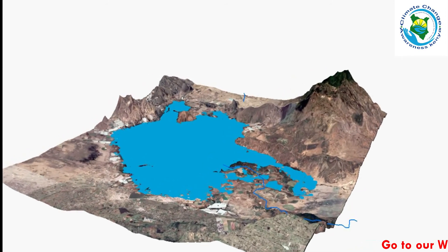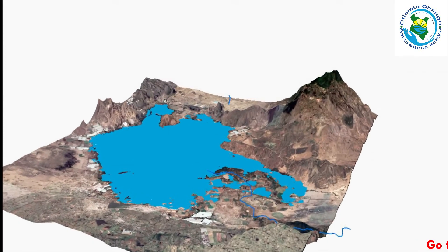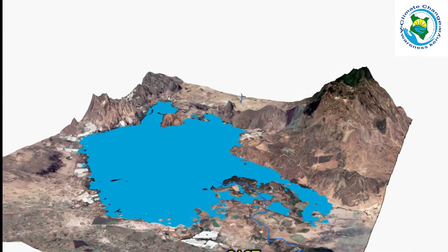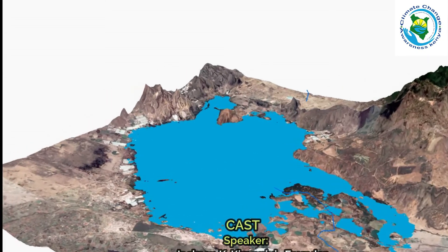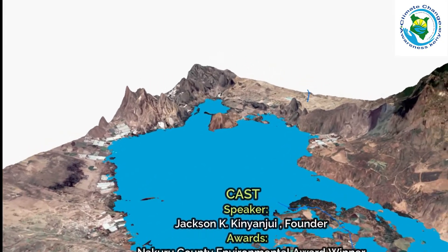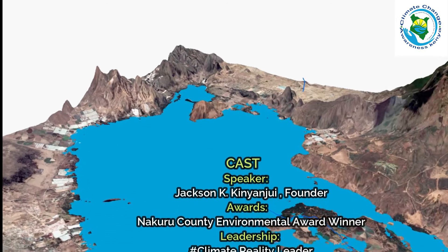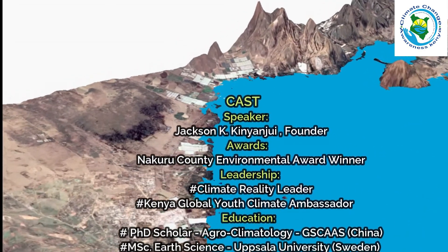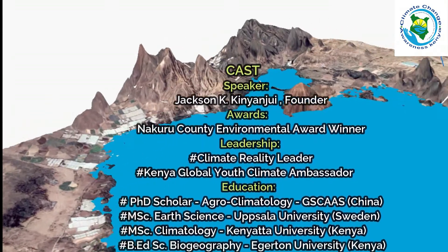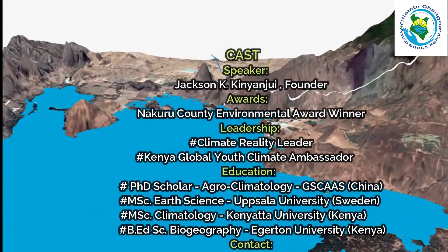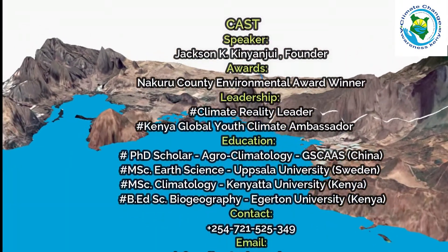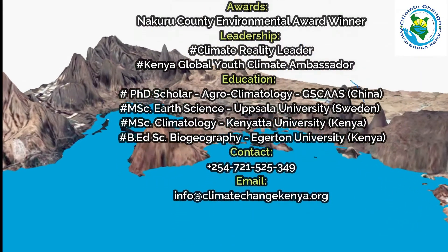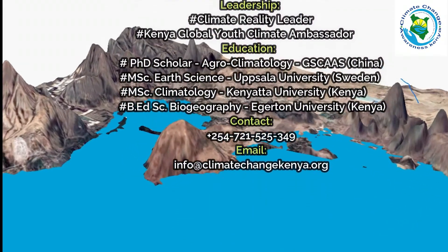Thirdly, it also includes planting of papyrus, which helps to reduce the siltation from the rivers which drain into Lake Naivasha. Fourthly, increasing reforestation activities within the Eburu and Badea forests. Lastly, dredging activities — this entails the removal of silt which has already raised the bed of the lake, which is why the flooding effect is being experienced.